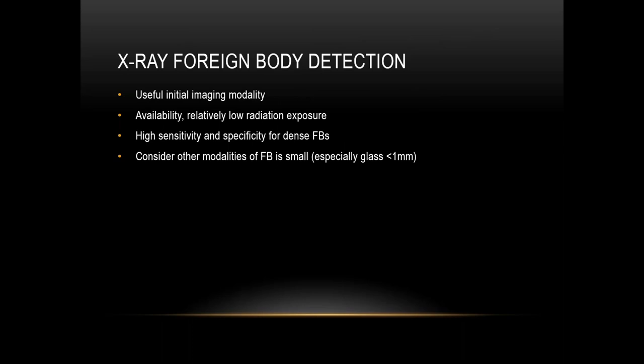X-ray is a useful initial imaging modality because of its availability and relatively low radiation exposure. It has high sensitivity and specificity for dense foreign bodies, but lower sensitivity and specificity for less dense foreign bodies such as wood. If a foreign body is very small — even if normally dense, such as glass — and is suspected to measure less than a millimeter, it may not be visible, so other modalities may be useful.